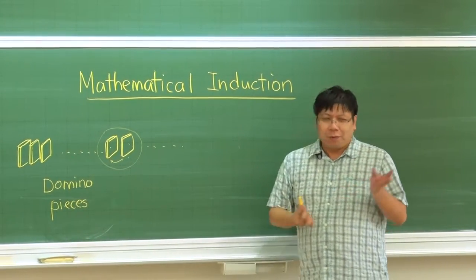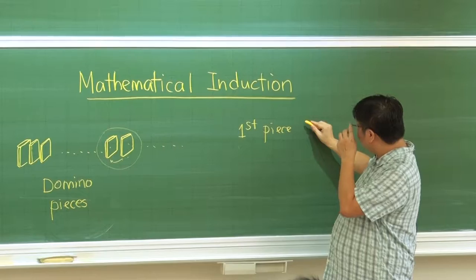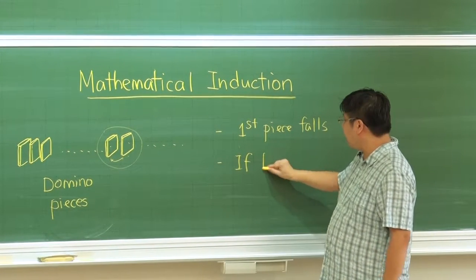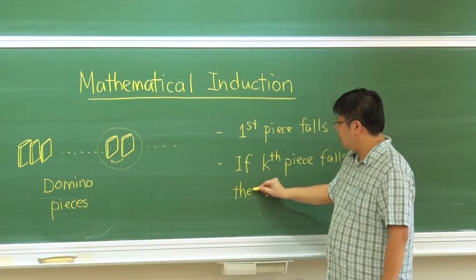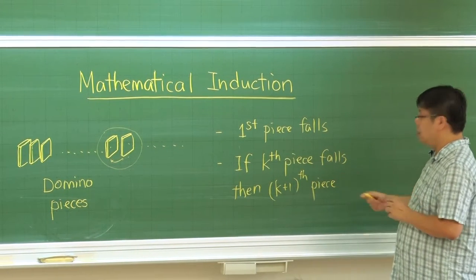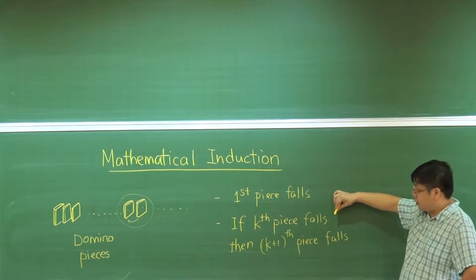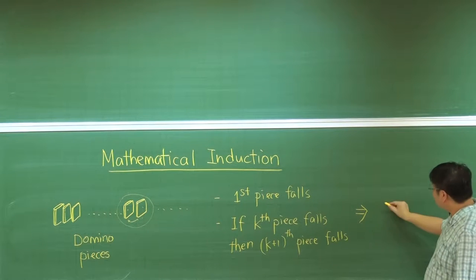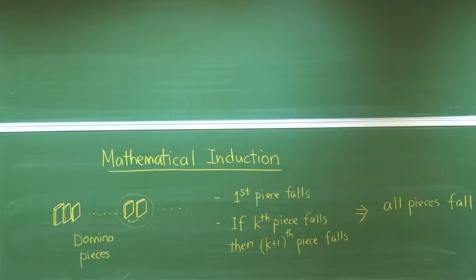So what do we have? We have some idea. Suppose that the first piece falls. And we also know that if the k-th piece falls, then the k+1 piece will also fall. Then immediately we can have the conclusion that all pieces fall.